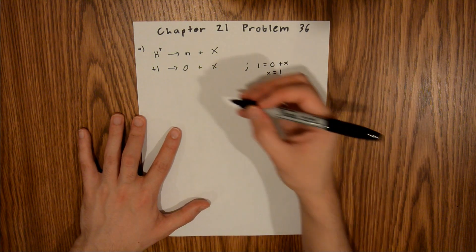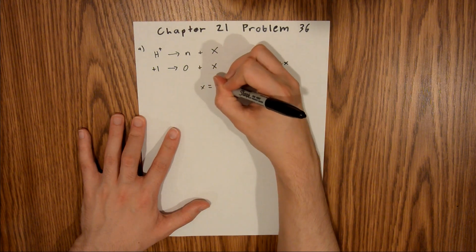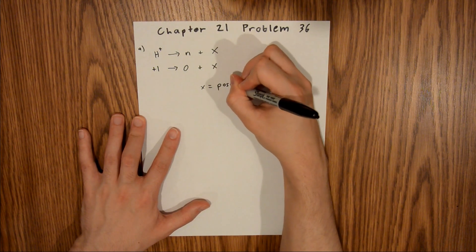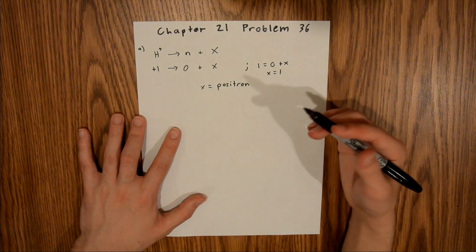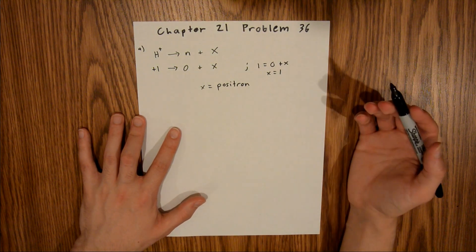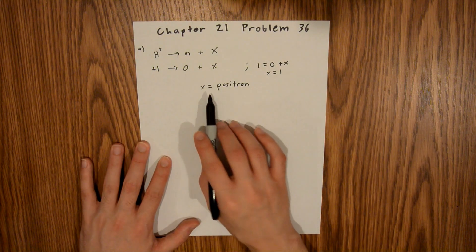If x equals 1, that must mean that x is a positron. If it was an electron, the charge would have been negative 1. So that is your final answer for Part A, and Part B is fairly similar.